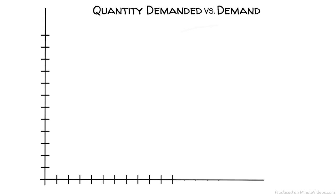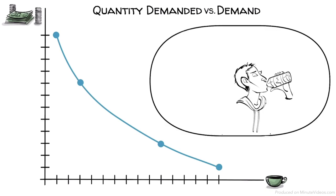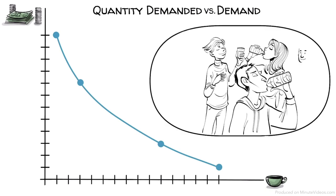Before we summarize, please note that economists differentiate between quantity demanded and demand. A change in the quantity demanded happens due to a change in price, like we explored when the price dropped and the quantity demanded increased. A change in demand happens when the environment changes.